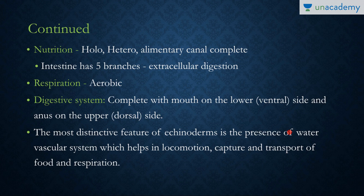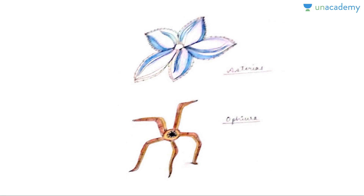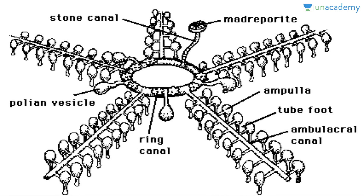The most characteristic and distinctive system of Echinodermata is the water vascular system, which helps in locomotion via tube feet, capture and transfer of food, and also in respiration. It is a very important feature. Note that this is different from the water canal system present in Porifera. Let me show you a picture of the water vascular system.